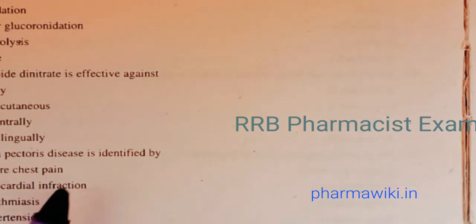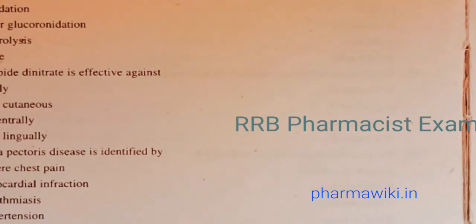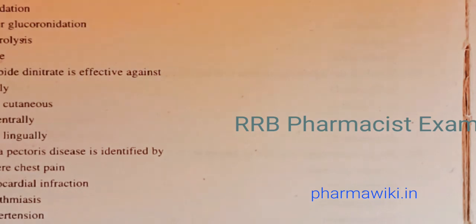Question 64: Angina pectoris disease is identified by — severe chest pain, myocardial infarction, arrhythmias, or hypotension? The answer is A, severe chest pain.